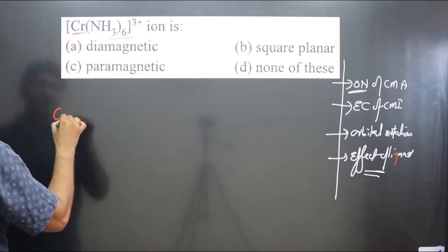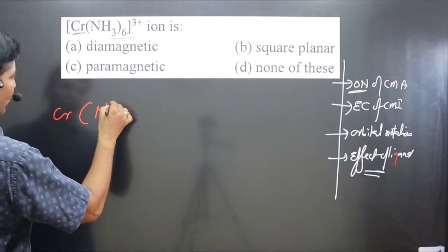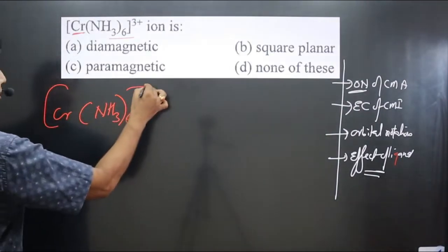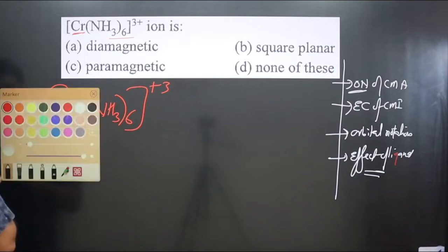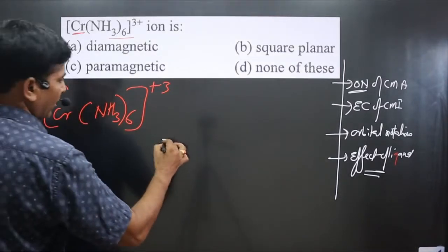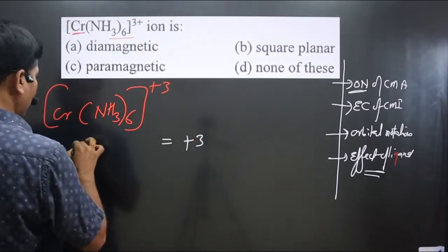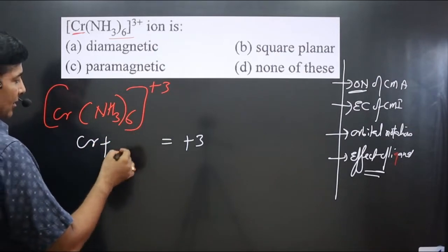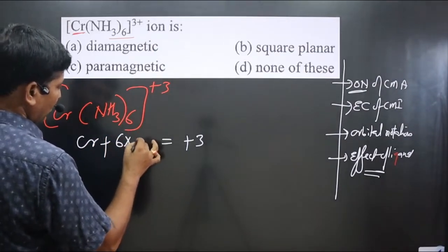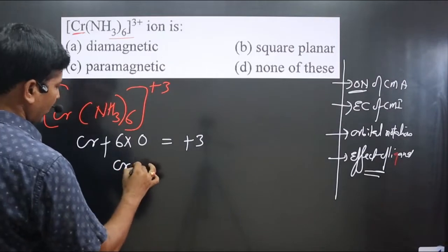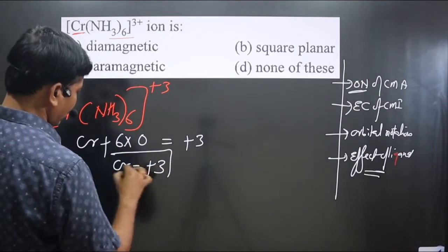We have Cr(NH3)6 with overall charge plus three. NH3 is a neutral ligand with zero charge. Total charge is plus three, so Cr plus six times zero equals plus three. Chromium is present in plus three oxidation number.